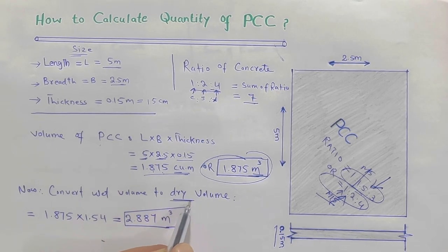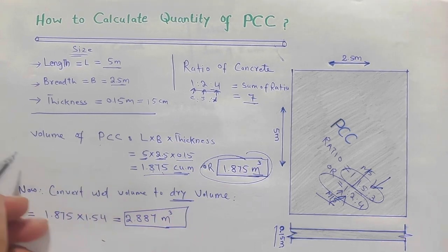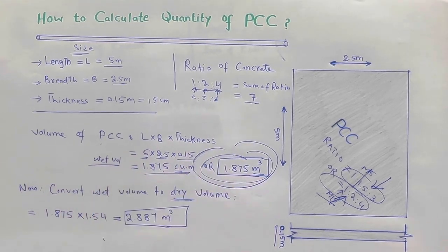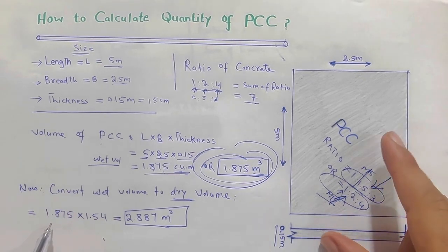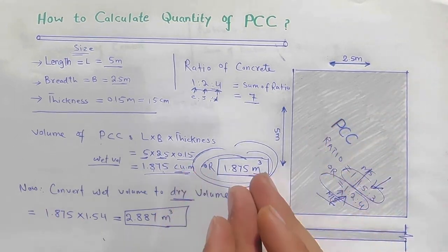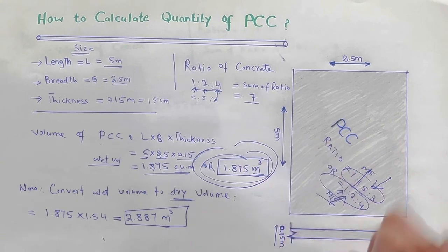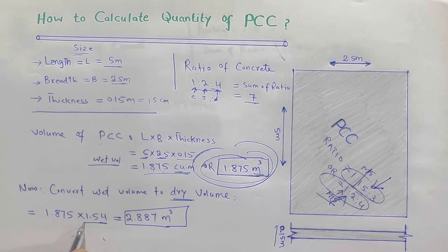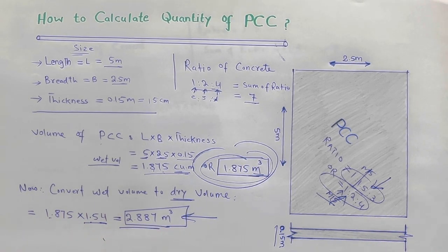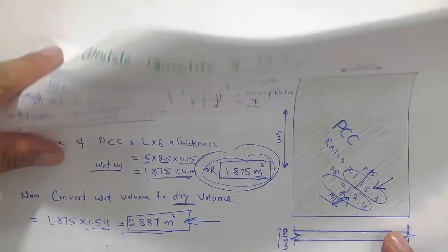Now let me convert the wet volume to dry volume, because from the market we will bring dry material. The wet volume increases by 54 percent to get the dry volume. Therefore, we multiply by 1.54. So 1.875 multiplied by 1.54 gives us 2.887 cubic meter, which is the dry volume.